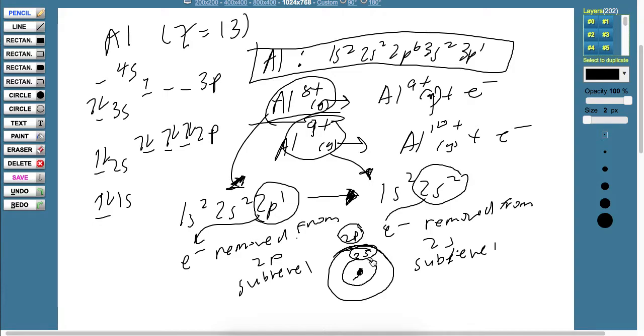And the 2s is going to be harder to liberate because it has a stronger electrostatic force, electrostatic attraction towards the positively charged nucleus. So the ionization energy will thus be very, very high for the 10th ionization energy.